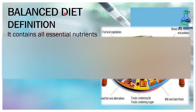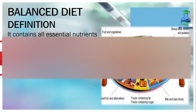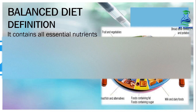Now we will see what is balanced diet. According to the definition, it contains all essential nutrients like carbohydrates, proteins, fats, minerals and vitamins in correct proportion for normal growth and development of the body.